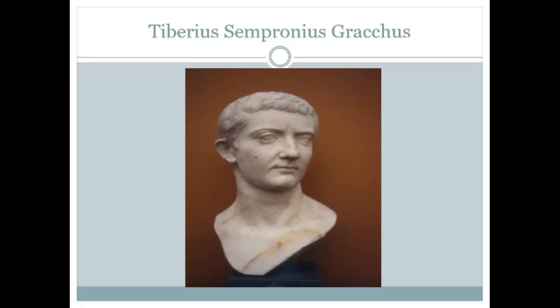What Gracchus proposed to do with his land reform bill was simply to enforce that original law. Citizens who held excessive amounts of public land beyond the 500-iugera limit would have their surplus confiscated, and that surplus would then be redistributed to the landless masses — the dispossessed smallholders who were accumulating in numbers in Rome as members of the capite censi, the landless headcount.